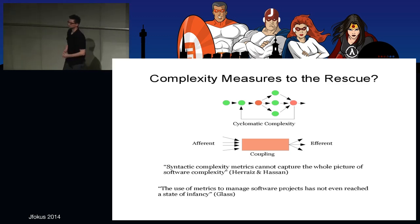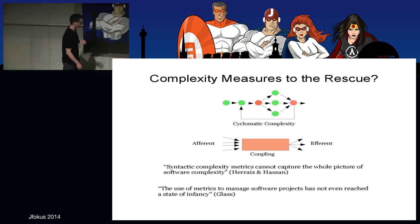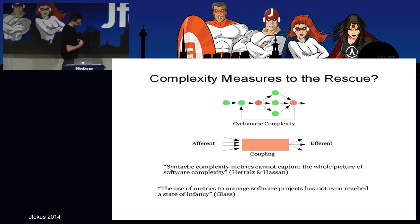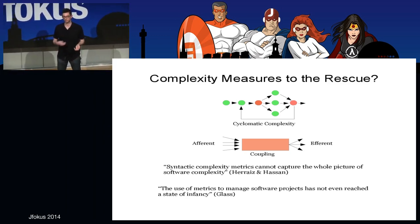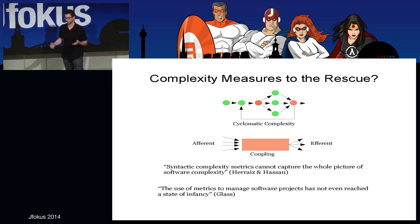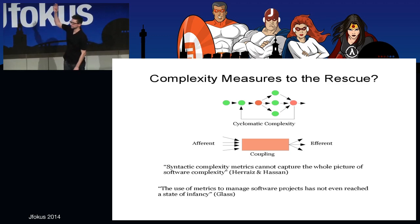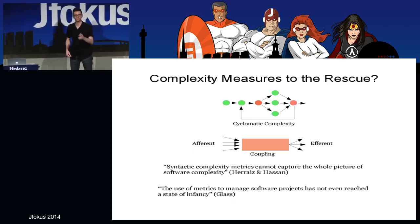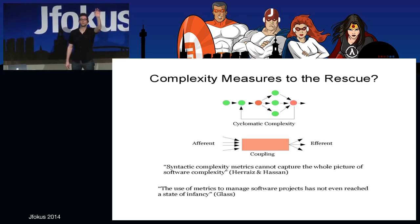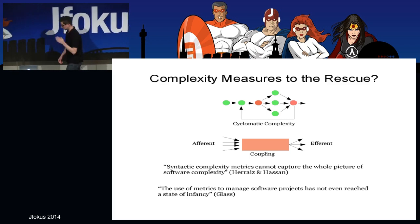Complexity in software is nothing new — it's been there since the dawn of time, and we have tried to find different ways to cope with it. One approach is complexity measures — we actually have metrics to measure complexity in software. The graph on top is cyclomatic complexity, developed by McCabe. It's quite a well-known measure, and some of you are using it. The basic idea: it's a function-level metric. You take your function, consider it a graph, and calculate the number of possible paths through it. The higher that number, the more decision points, the higher the complexity.